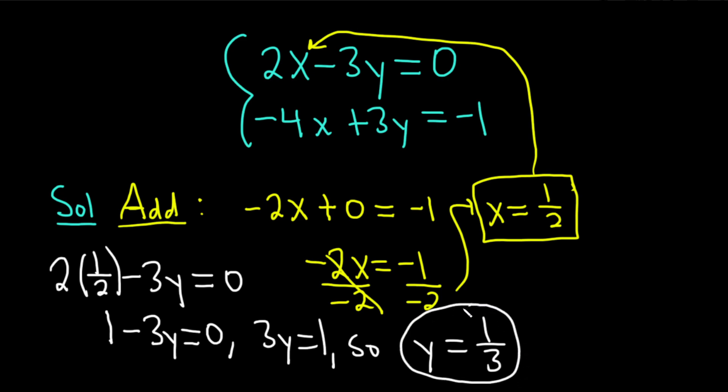And so that would be the answers for this problem. So x is 1 half and y is 1 third. The actual answer is an ordered pair. This is the point of intersection. So if you were to graph both of these lines in the xy plane, this is the point where they would intersect. I hope this video has been helpful. Good luck.